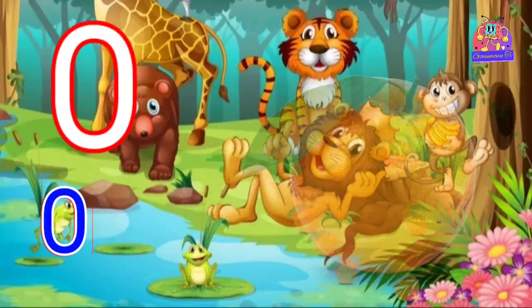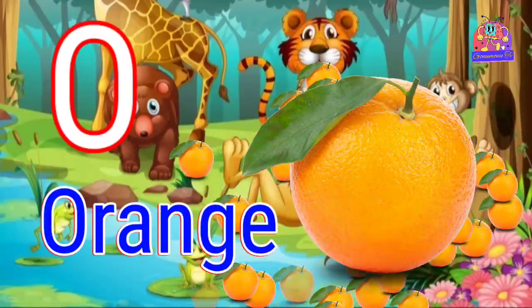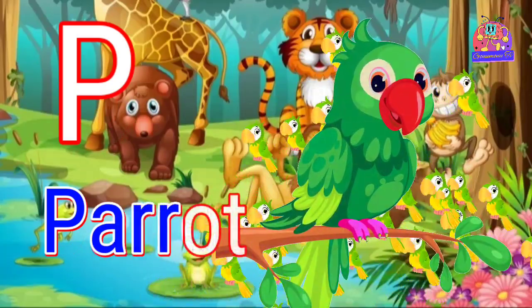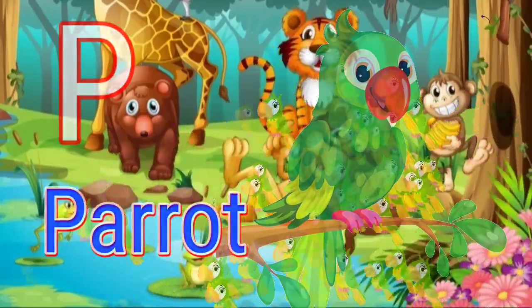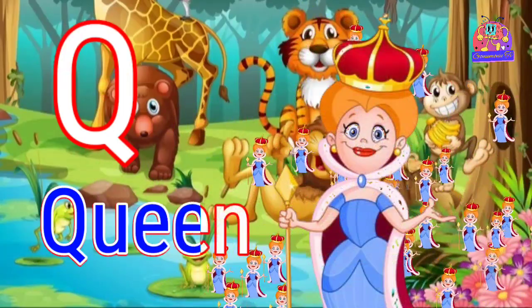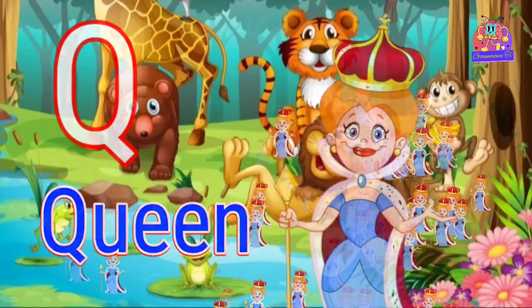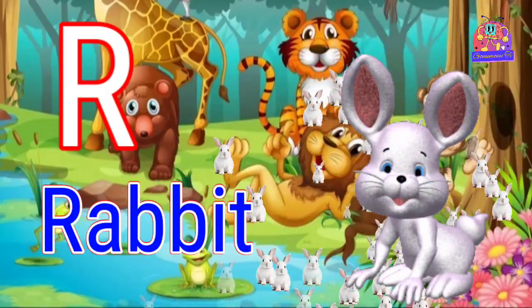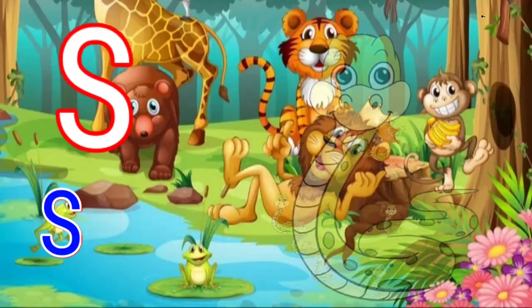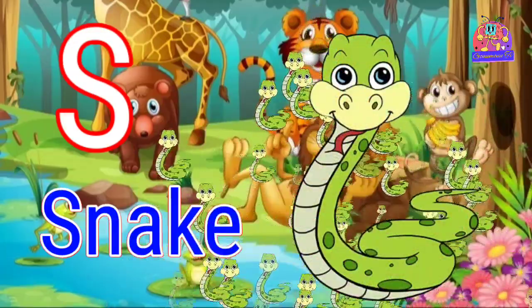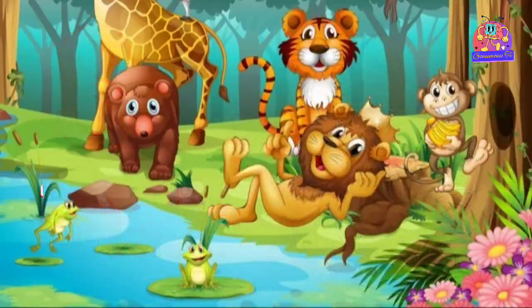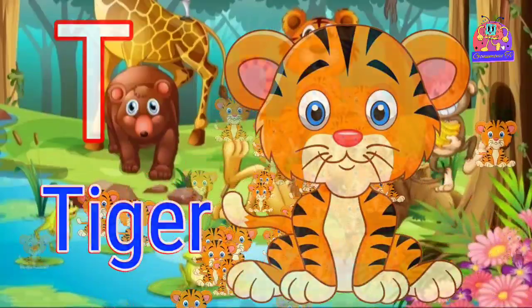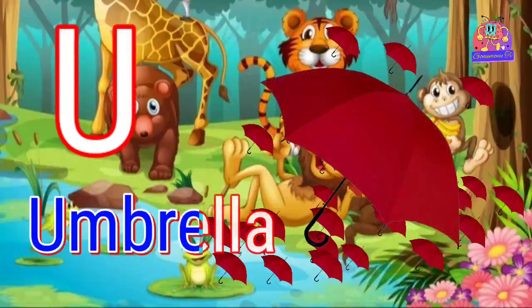O for orange. P for parrot. Q for queen. R for rabbit. S for snake. T for tiger. U for umbrella.